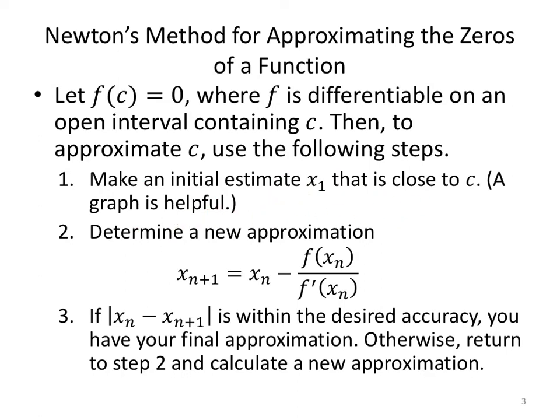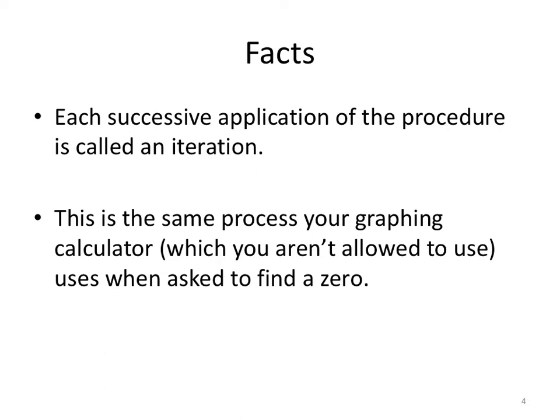A graph is helpful sometimes for finding these close values. Now we're going to determine a new approximation. So our next x value x_{n+1} is the current x value x_n minus the ratio of the function at the current x value divided by the derivative at the current x value. Now if you get two successive entries that are within a desired accuracy, maybe you want to be within one thousandth, if you have two values that agree up to three decimal places, take that as your final approximation. If this doesn't work for you, then return and make the new approximation. These are called iterations.